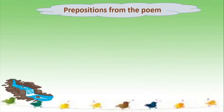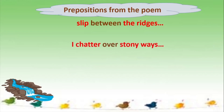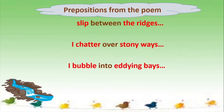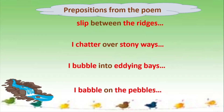Now let us find prepositions from the poem itself. 'Slip between the ridges' is an example of a preposition. 'I chatter over stony ways' — that is again an example. 'I bubble into eddying bays' is an example of a preposition. 'I babble on the pebbles.' So between, over, into, on — these are all various examples of prepositions from the poem. If you read the poem properly again, I am sure you will find many more examples.